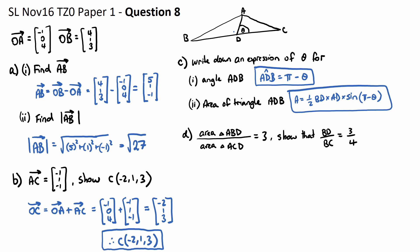Part D. It says the area of the triangle ABD over the area of the triangle ACD is equal to 3. Show that BD over BC is equal to 3 on 4.